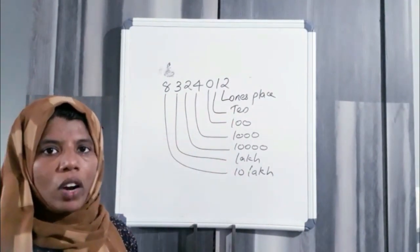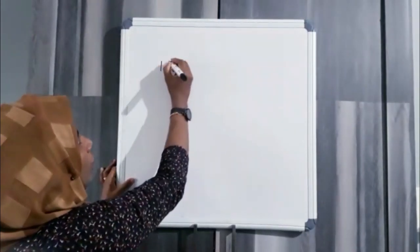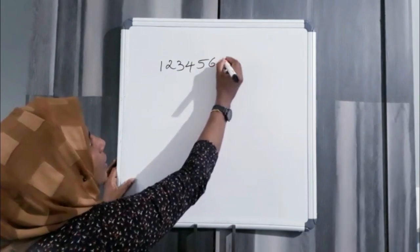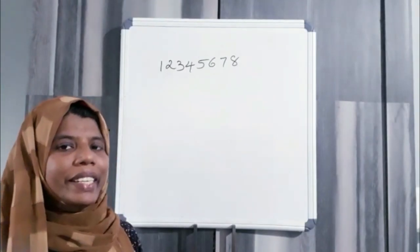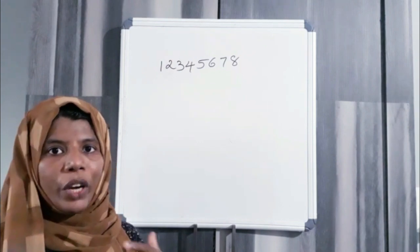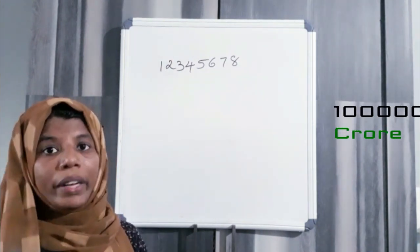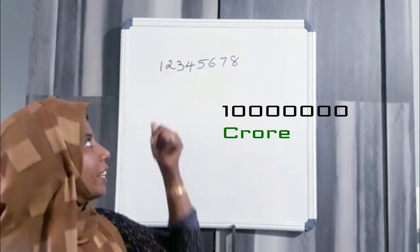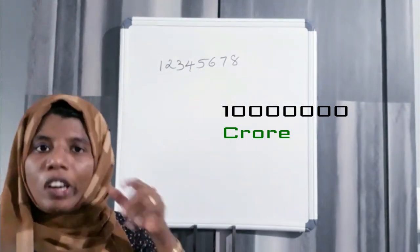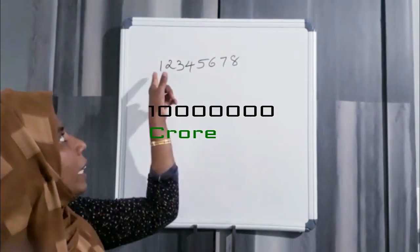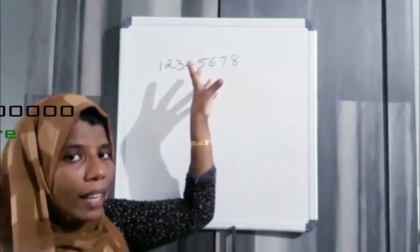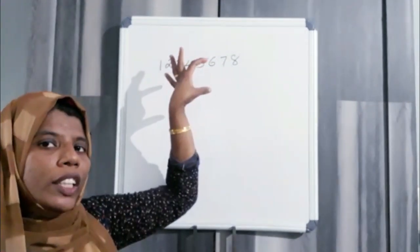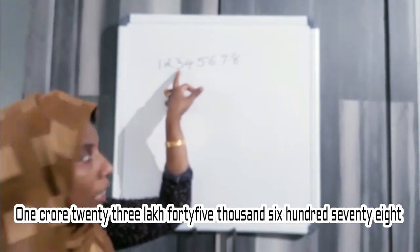Now we have 8 digits: 1, 2, 3, 4, 5, 6, 7, 8. Now we have 8 digits. The smallest 8-digit number is crore. Everyone knows. The smallest 8-digit number is 1 crore. How many crore? That is 7 zeros. The smallest 8-digit number is 1 crore — we have to write crore. Then we have the 8-digit number.